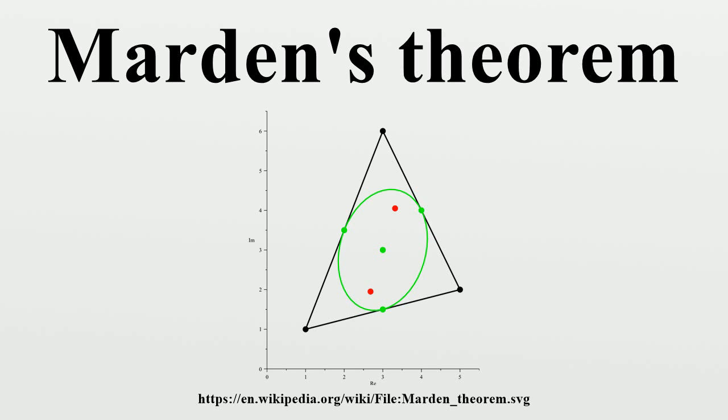History: Jörg Seebeck discovered this theorem 81 years before Marden wrote about it. However, Dan Kalman titled his American Mathematical Monthly paper 'Marden's Theorem' because, as he writes, 'I call this Marden's theorem because I first read it in M. Marden's wonderful book.'